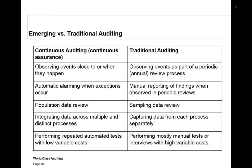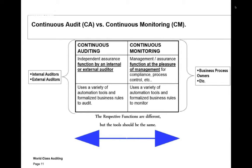Performing repeated automated tests with low variable costs — that's really the key idea. Why don't we use the technology that's out there? Then we get into the discussion about the difference between continuous auditing and continuous monitoring. It doesn't matter whether you're doing monitoring in order to audit — the biggest gain is using analytics to make sure your strategy and operations are working best, not just for auditing.